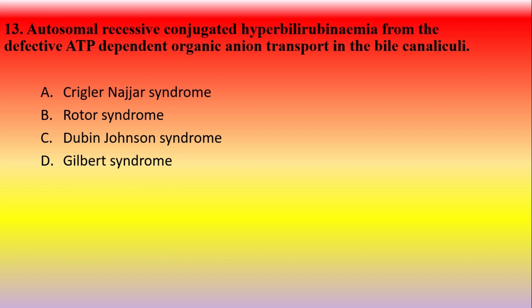Autosomal recessive conjugated hyperbilirubinemia from defective ATP-dependent organic anion transport in bile canaliculi — option A: Crigler-Najjar syndrome, option B: Rotor syndrome, option C: Dubin-Johnson syndrome, option D: Gilbert syndrome. The answer is Dubin-Johnson syndrome. Here the active transport of conjugated bilirubin from the liver to the bile duct does not happen. This results in a black liver — that is what we call Dubin-Johnson syndrome.